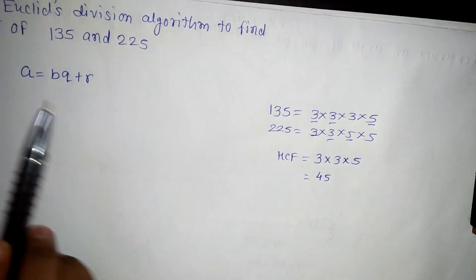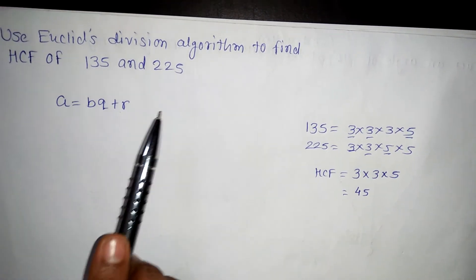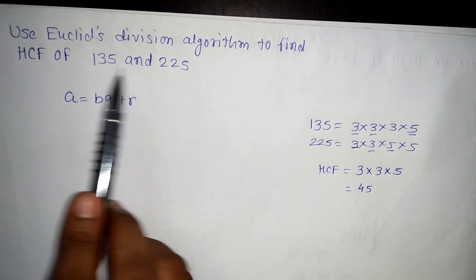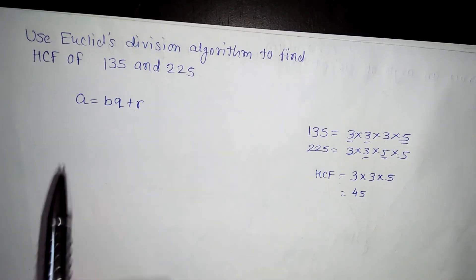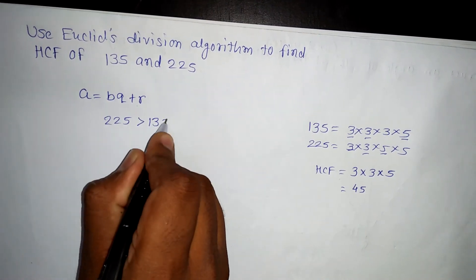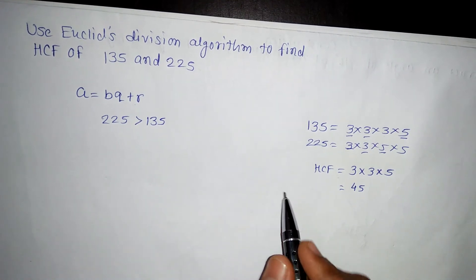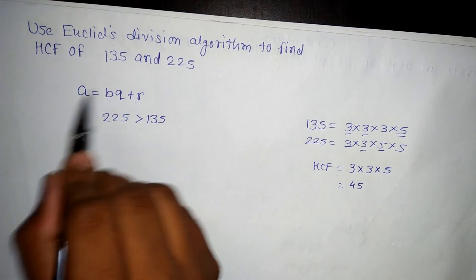Now we will go to find out the same thing by the Euclid's division algorithm. For doing that, first of all the first step is that we need to see which one of them is greater. Then we know that 225 is greater than 135. Before doing this, I'll show you that, write it simply and then we'll keep it in this particular format.